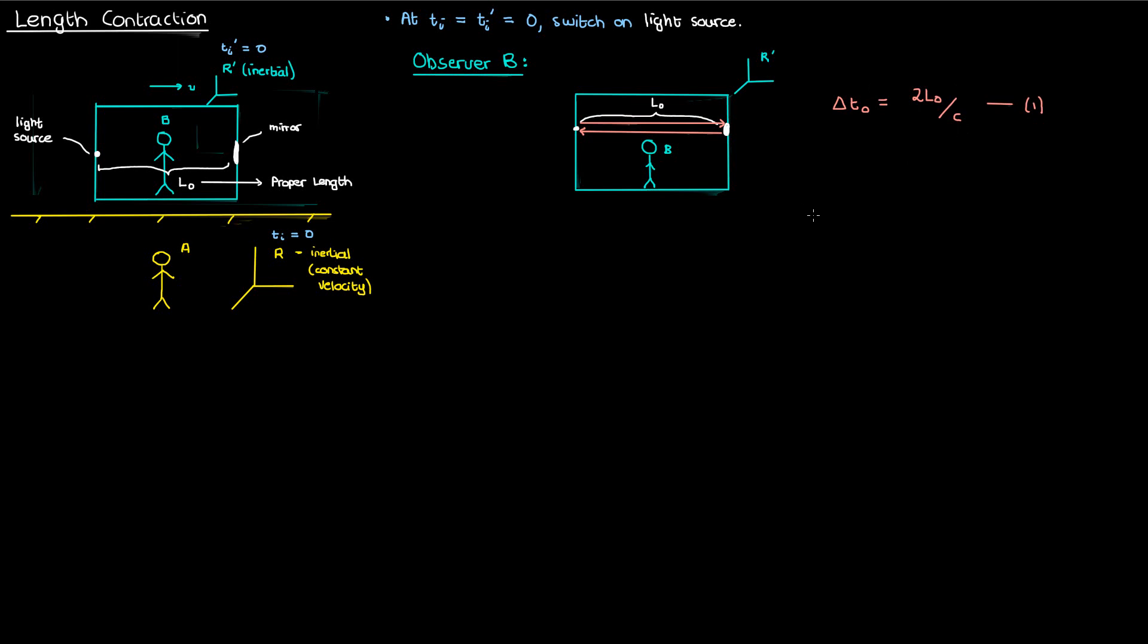Observer B was pretty easy to understand, but let's get real empathetic and look at things from observer A's perspective. So observer A is standing on a train platform at rest with respect to the ground. In A's frame of reference, the source of light and the mirror are moving at a velocity V to the right. I'm not going to draw the rest of the train, just the source and the mirror to keep things simple.